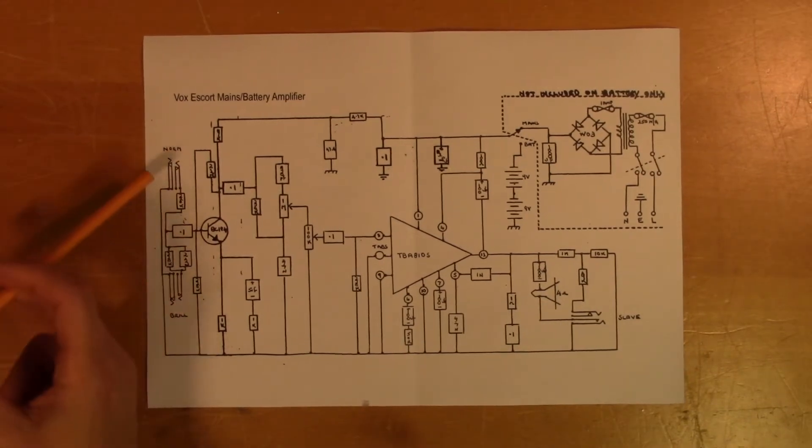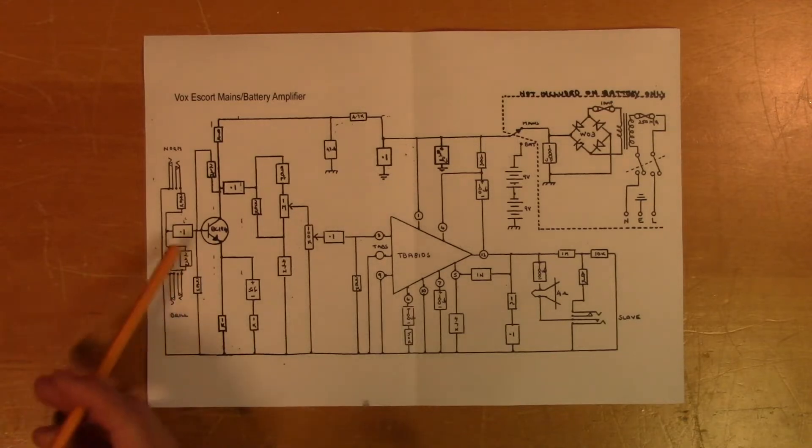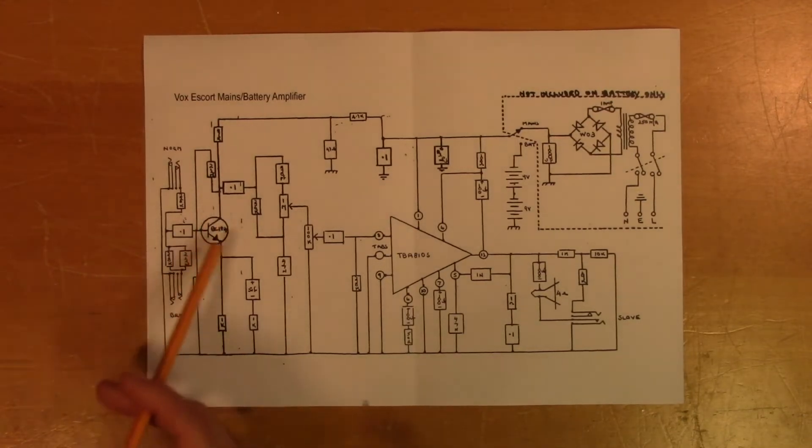We have two audio inputs, normal and brilliant. And depending on which one you choose, you get a slightly different sound. What differs is that the brilliant input has this filter instead of just a resistor. And this filter lets a bit more of the high frequencies through. So there will be a bit more treble using this input, which I guess they call brilliance.